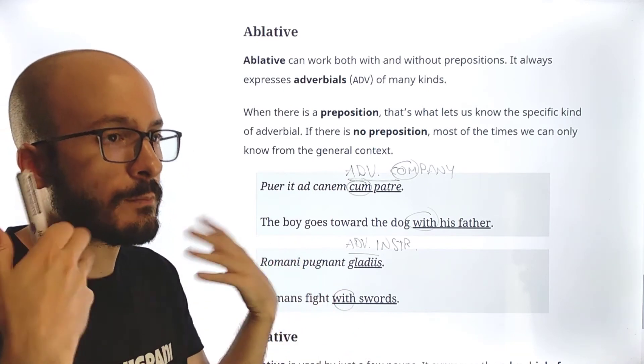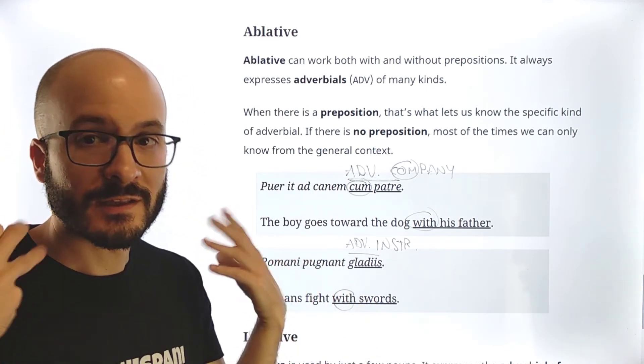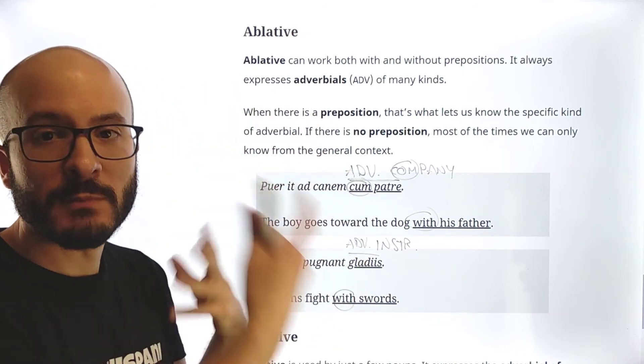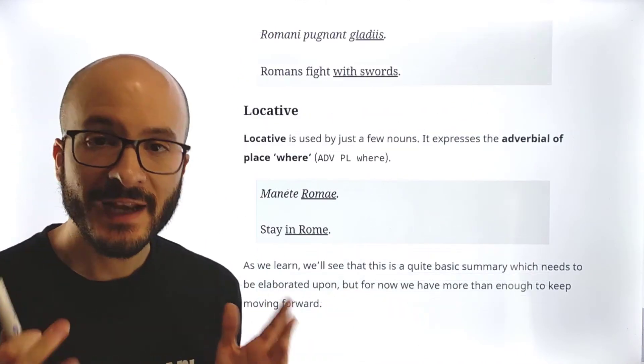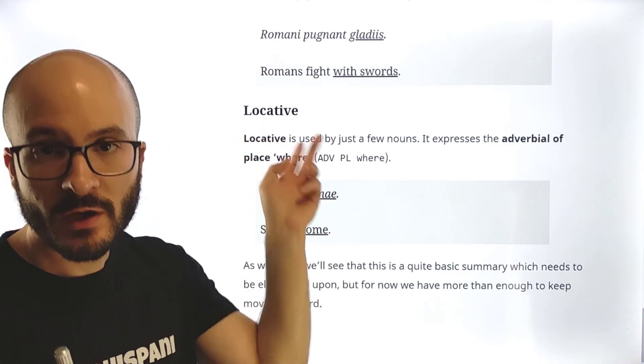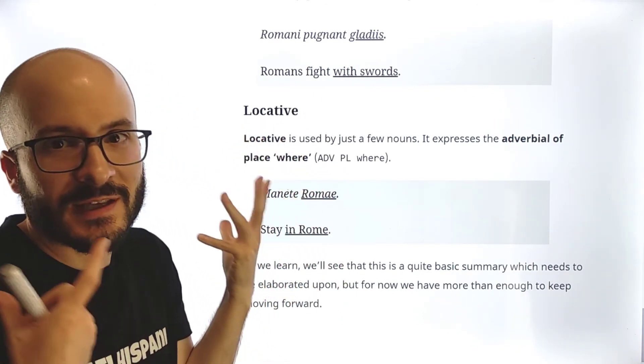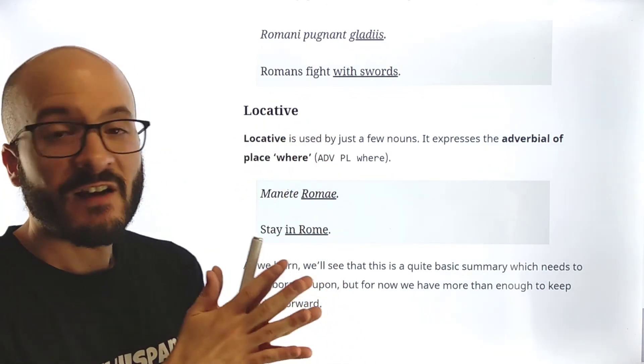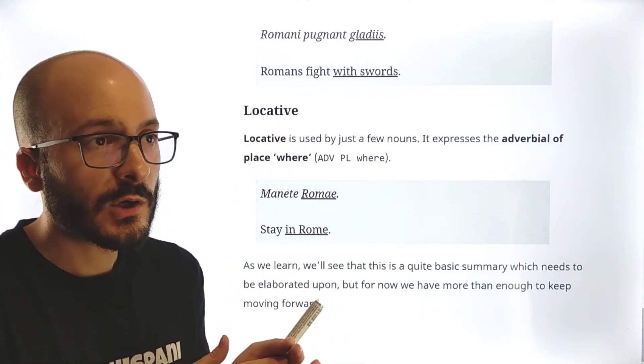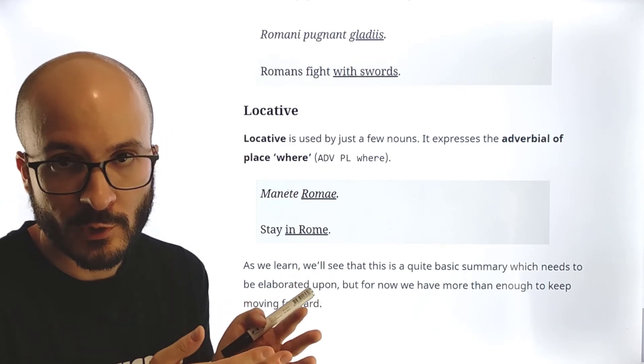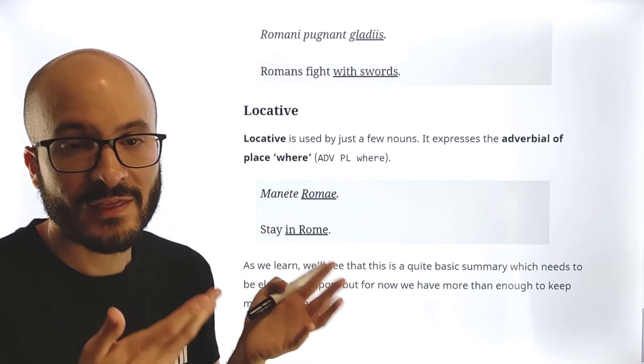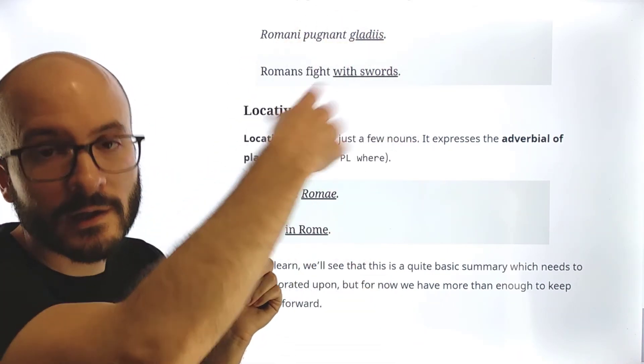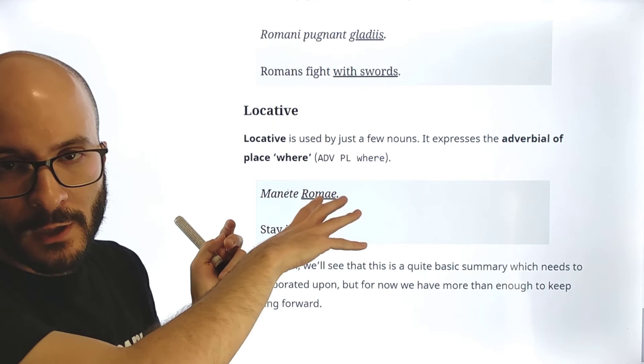Again, we will be learning with the practice, with the sentences, with the texts, we will be learning which prepositions mean each thing, etc. And the last case, which is the locative. And we can guess what this locative is for. First, it is used by just a few nouns. That's why it is so uncommon to use it or to find it in texts. And that's why we just introduce it here. And later we will say a bit more about it. And that's it.